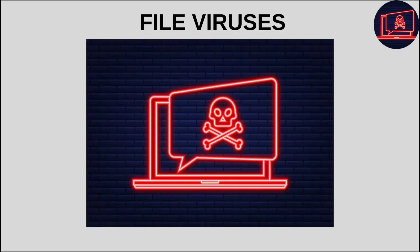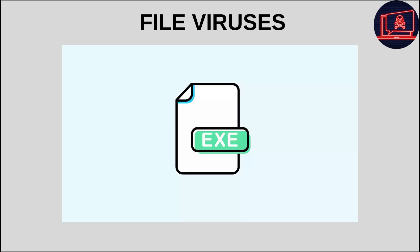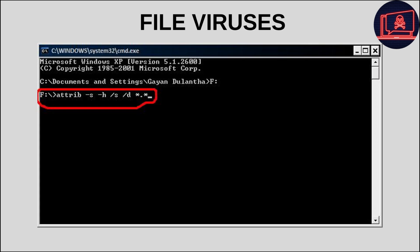File viruses are one of the most common types of viruses in the computer world. Basically, they infect program files on your computer, especially executable files with exe or com extensions. The virus attaches itself to these files and becomes active when the original program is run.